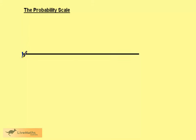The bottom end of the probability scale is a probability of zero. A probability of zero is the probability of an event which is impossible. So if an event has a probability of zero it cannot happen.